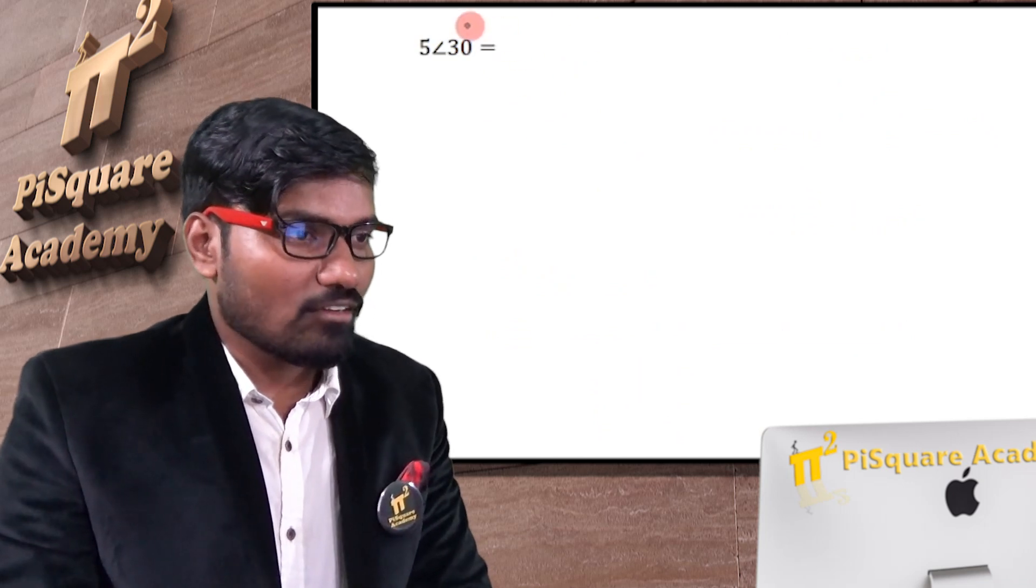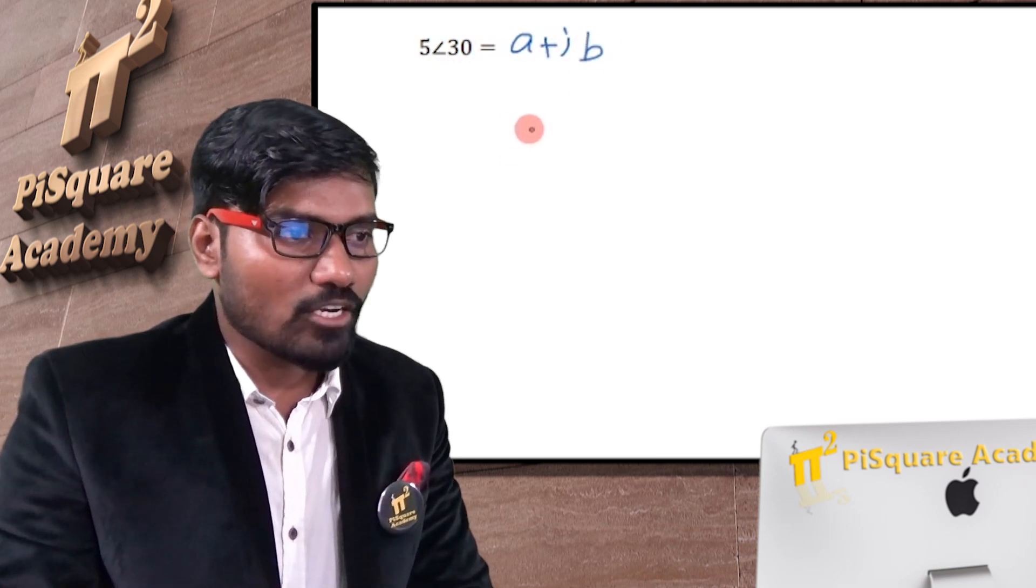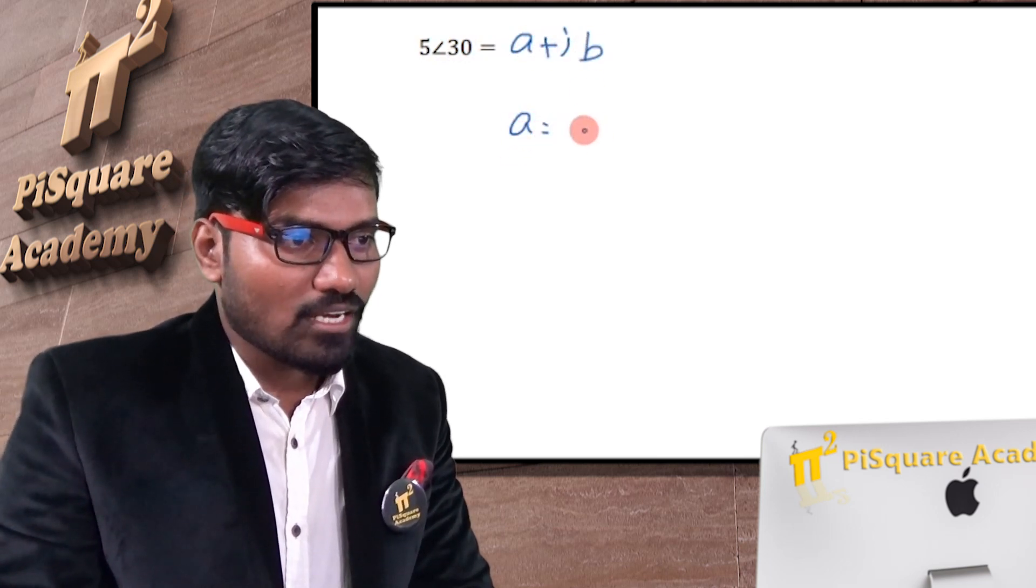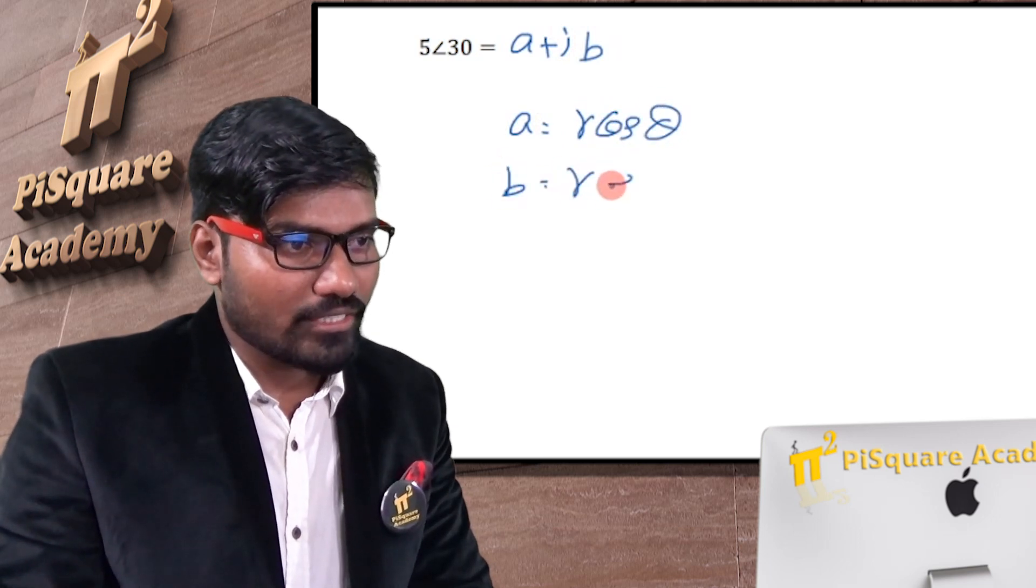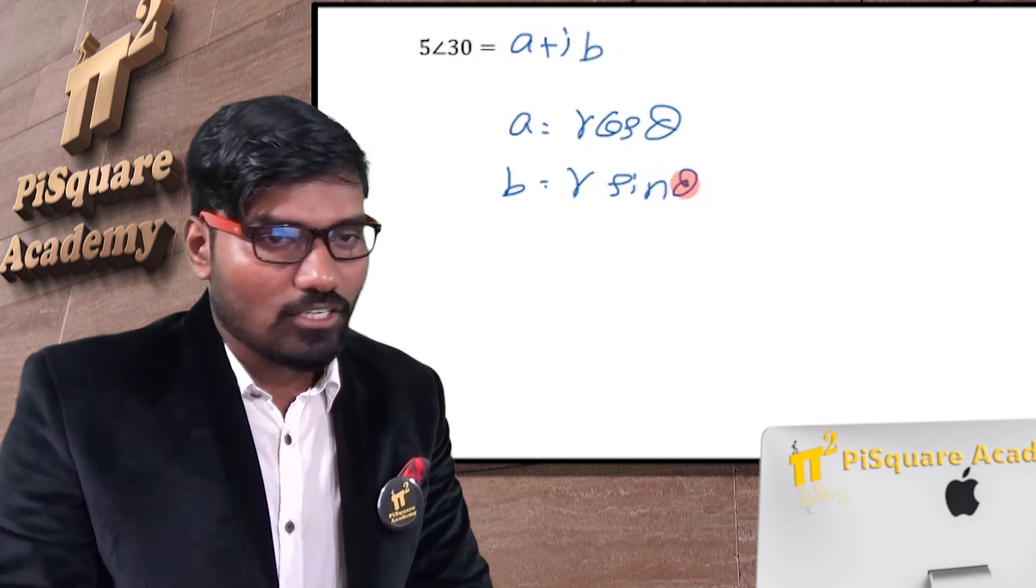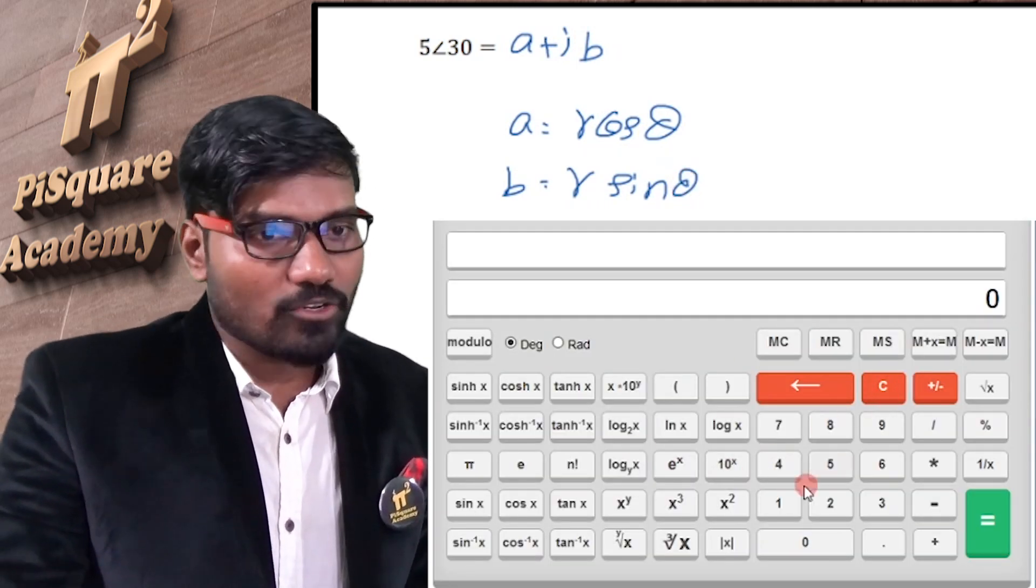I have this question. 5 at an angle 30, I want to convert it to rectangular form. Rectangular form is a plus jb form. What is the value of a? a is equal to r cos theta, and b is equal to r sine theta. So this is the calculator I have. Let's clear it first.